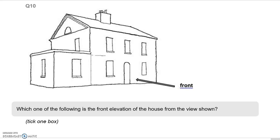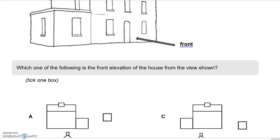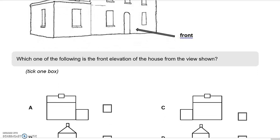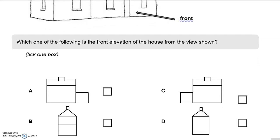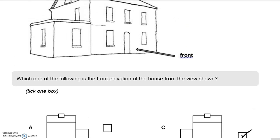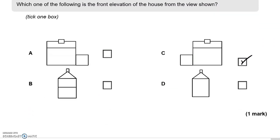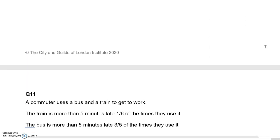Question 10: which one of the following is the front elevation of the house from the view shown? Tick one box. Looking at the options: it's not A, because the extension in the picture is on the left, not the right. It's not B — that is a side view. It's not D either. So the answer is C.